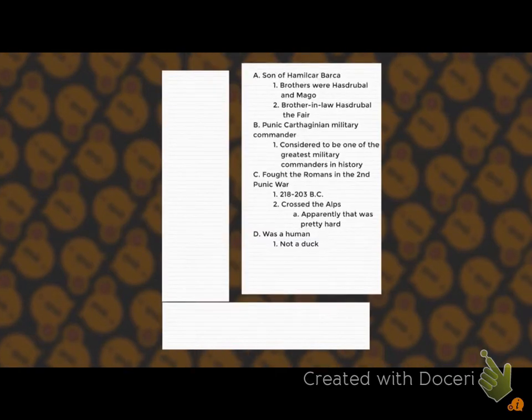So here's an example of somebody who took notes on Hannibal and shows he's the son of Hamilcar. He was in the Punic military. He fought the Romans. He was a human. He was not a duck.